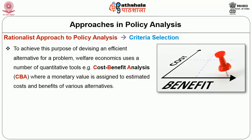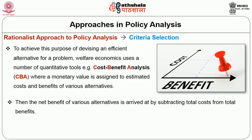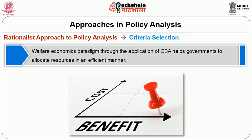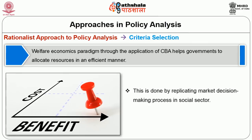To achieve this purpose of devising an efficient alternative for a problem, welfare economics uses a number of quantitative tools — for example, cost-benefit analysis — where a monetary value is assigned to estimated costs and benefits of various alternatives. Then the net benefit of various alternatives is arrived at by subtracting total costs from total benefits. The alternative that has the highest net benefit, i.e., that costs minimum and leads to maximum welfare, is then chosen for implementation. Thus, welfare economics paradigm through the application of cost-benefit analysis helps governments to allocate resources in an efficient manner, by replicating the market decision-making process in the social sector.